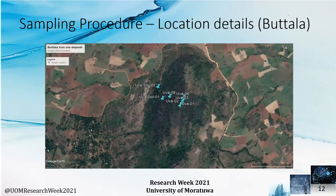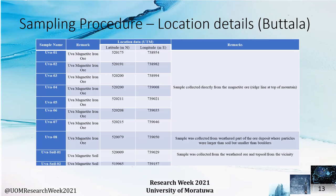At the Buttala–Uwe magnetite deposit, we collected samples from the fresh iron ore itself, from the weathered and transported material, and from the topsoil, because at this location the iron ore deposit, which had been weathered and transported, had covered a large area.